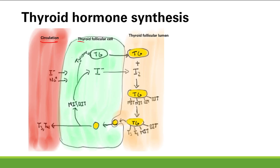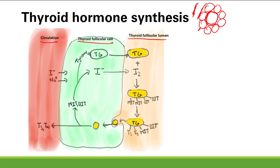Here we have the circulation, the thyroid follicular cells, and the thyroid follicular lumen. You can see all these thyroid cells on histology with blood vessels around them. Step one: the thyroid cell takes up iodide from the circulation and sends it into the thyroid follicular lumen. Step two: it oxidizes iodide into iodine (I₂). Step three is iodination — you take this iodine and couple it to tyrosine residues on the thyroglobulin.